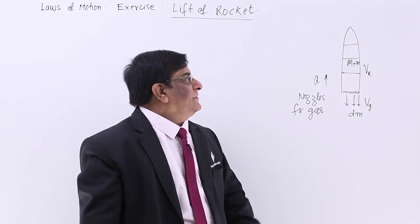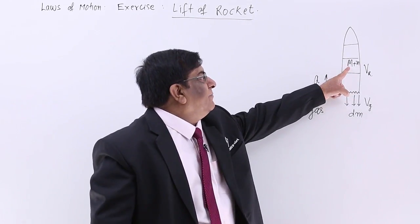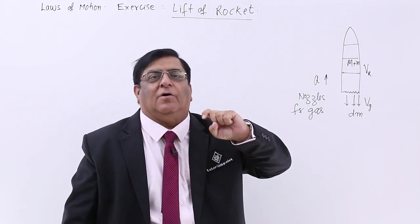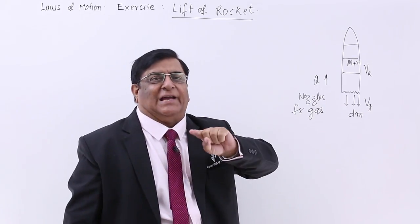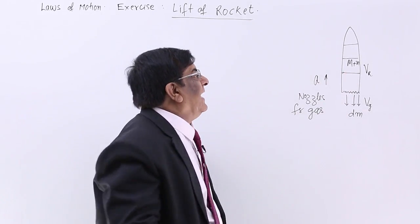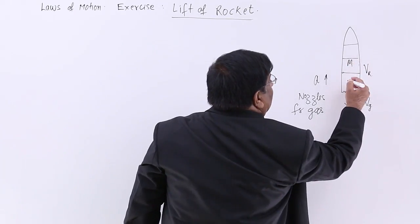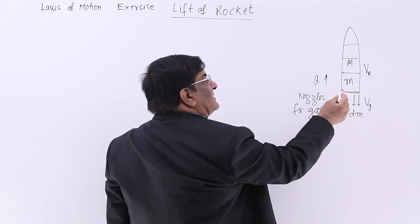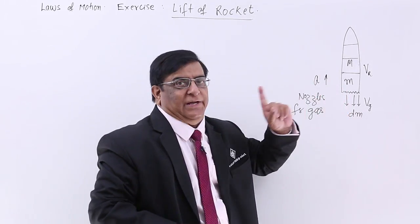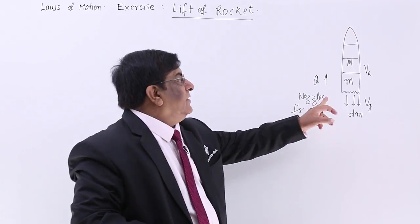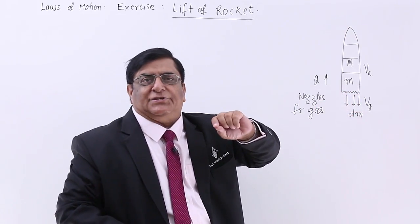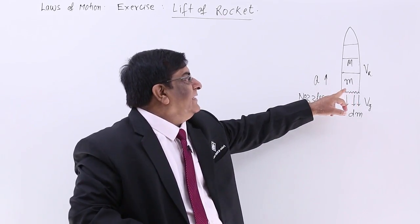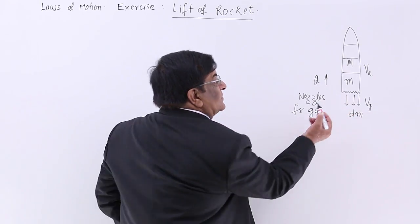Now in the rocket initially there is a body with mass capital M and the solid fuel or whatever fuel the scientist chooses has mass small m. Ignition is done and because of the ignition fuel starts burning and the gases come out from these nozzles.